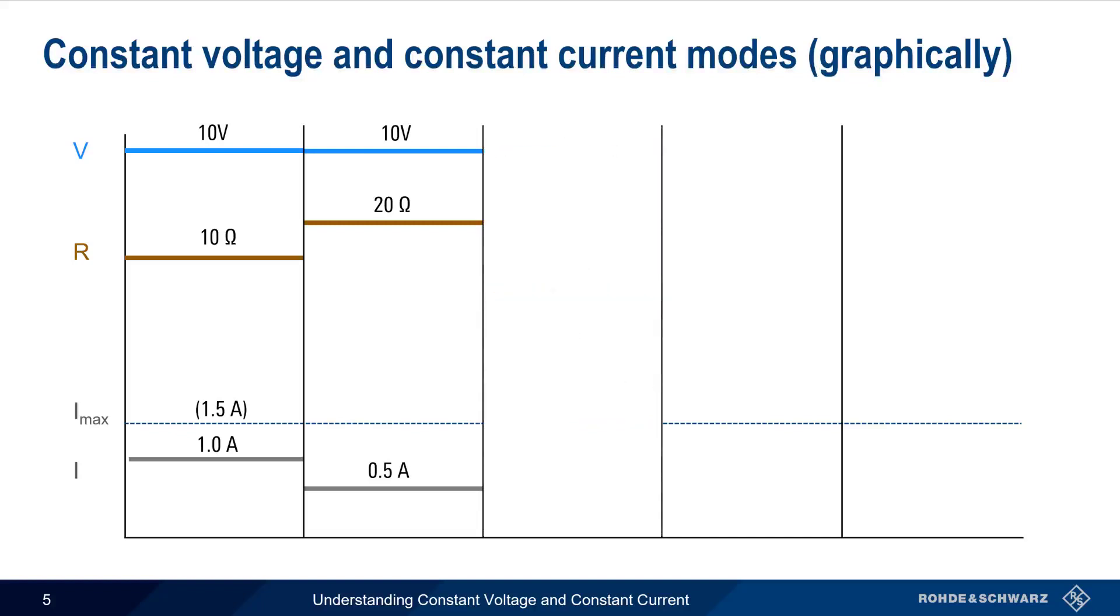Instead, at this point, the power supply would enter constant current mode and would lower the output voltage to only 7.5 volts, so that the output current is limited to the configured maximum value of 1.5 amps.